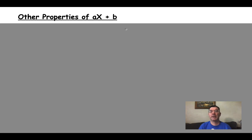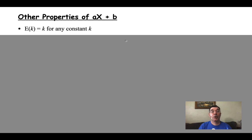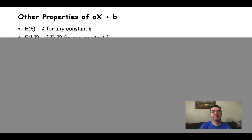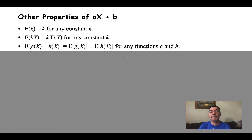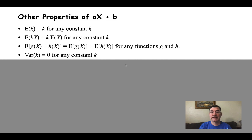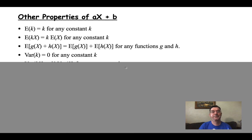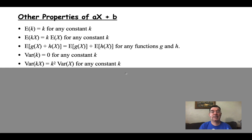Here are some other properties of ax plus b — I'll leave the proofs as an exercise. The expected value of a constant is just that constant. The expected value of a constant times x is just that constant times the expected value of x. The expected value of a sum is the sum of the expected values of those functions. The variance of a constant is zero because constants don't vary. And the variance of a constant k times x is k squared times the variance of x. Those are all the properties you need to know for taking a distribution x, possibly multiplying it by a constant a, and possibly adding a constant b.